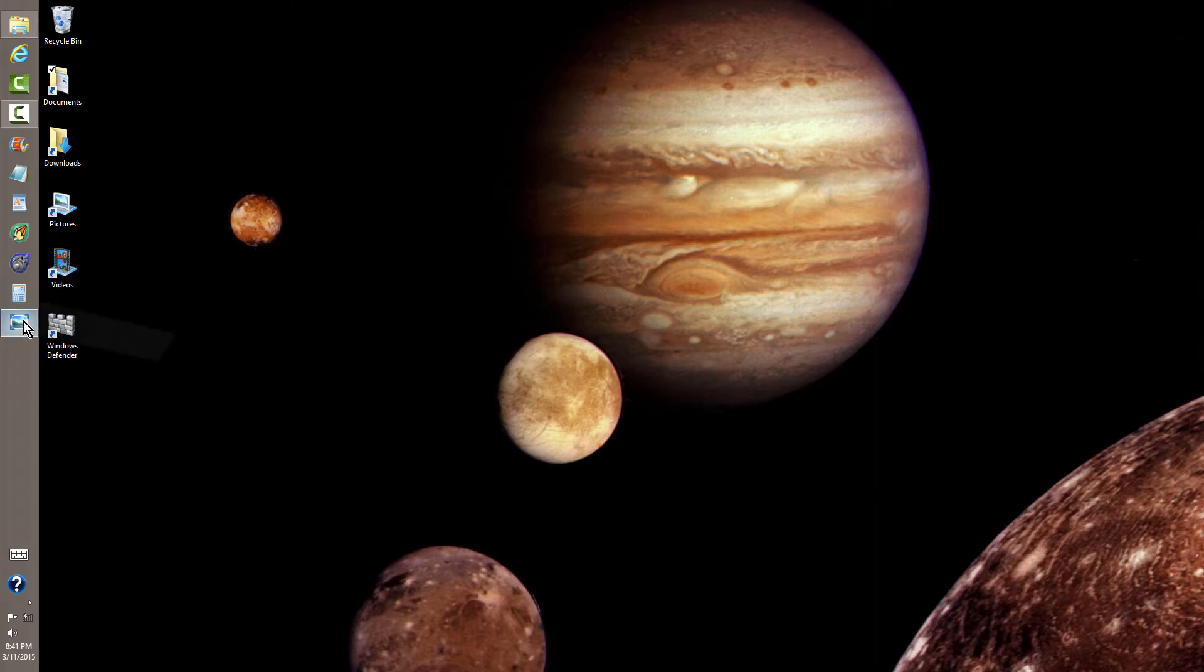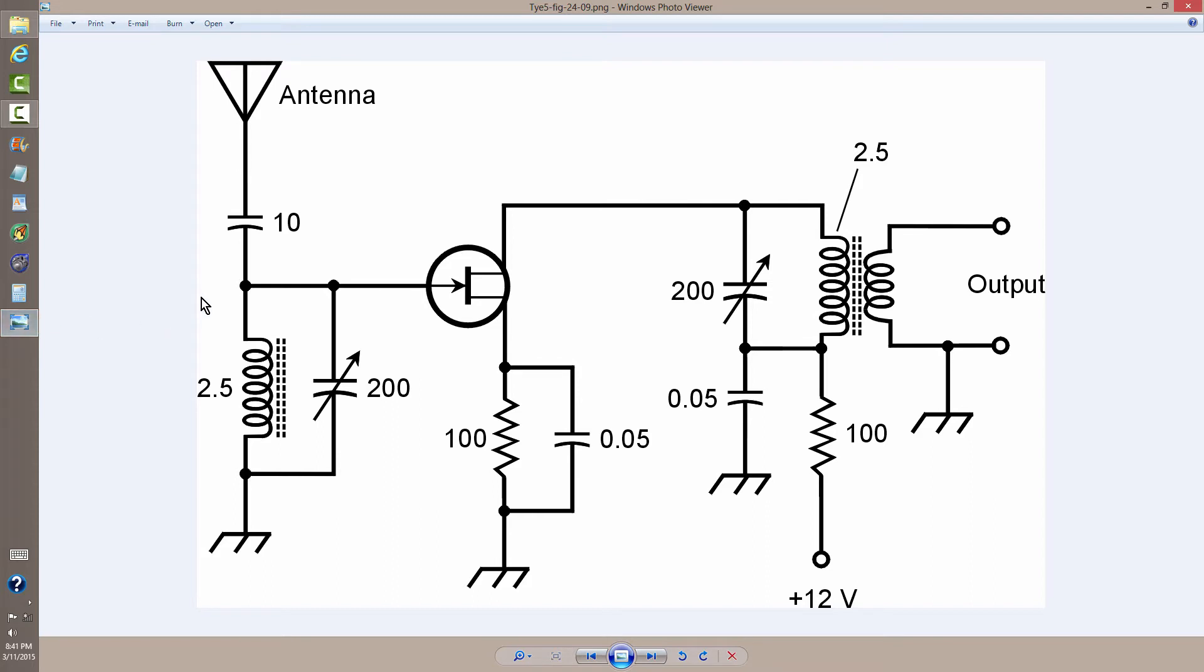But when you actually have a practical circuit such as the one shown here, this happens to be a radio frequency amplifier circuit, how do you tell that you've got resonance?